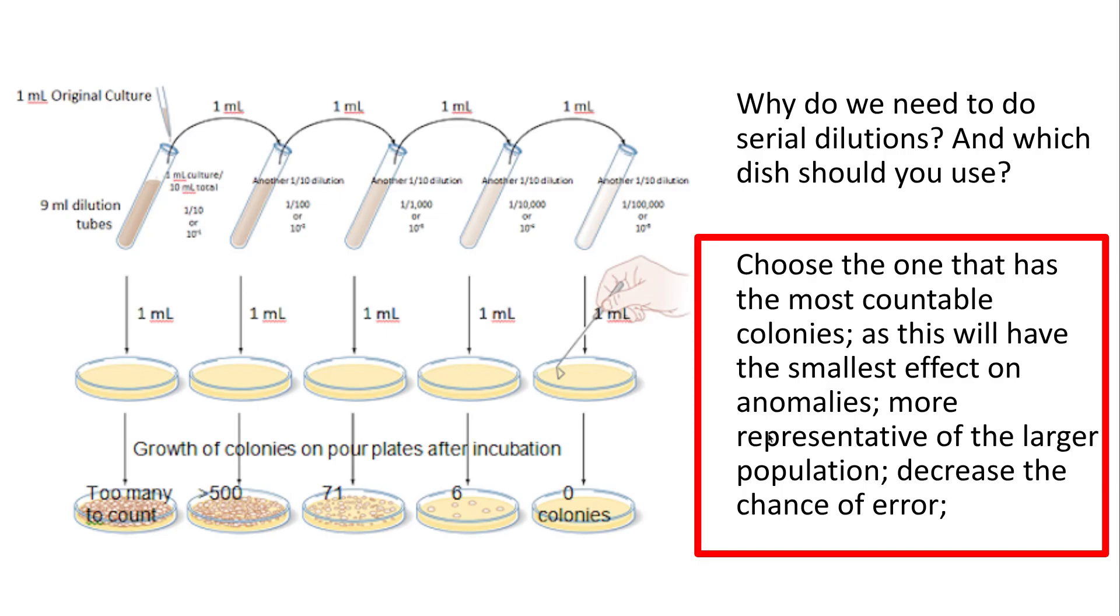So in this particular case the plate that I would pick here is this one here. It has the most countable colonies, it will have the smallest impact on anomalous information and be more representative of the original culture that we have over here.